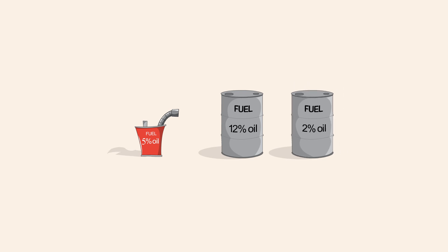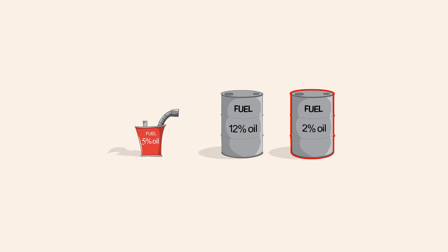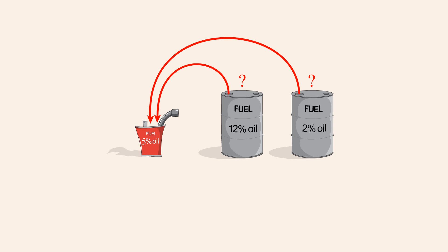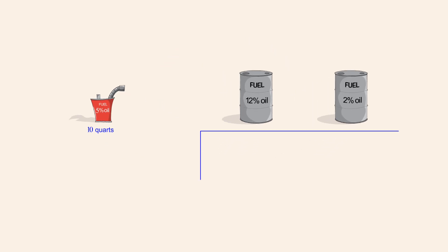Since the blower requires a five percent oil mixture, the oil in one barrel is too concentrated and the oil in the other is too diluted. A.V. wonders if fuel from the two barrels could be combined in some way to create a five percent oil mixture. Using algebra, it is possible to calculate the amount of fuel to mix from each barrel in order to fill his ten-quart can with fuel containing five percent oil. If we let x represent the volume of fuel to take from the twelve percent barrel, then the amount of fuel to take from the two percent barrel must be ten minus x, since the two volumes must total ten quarts.